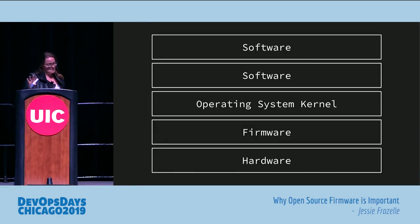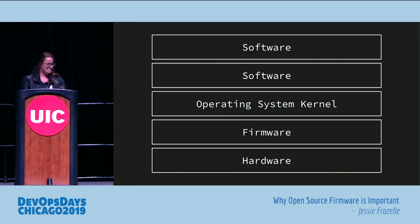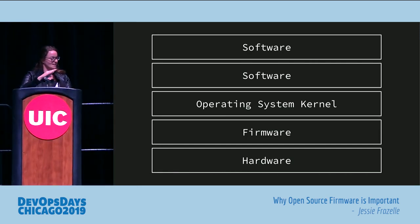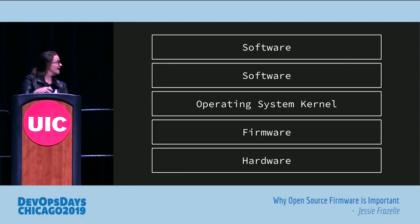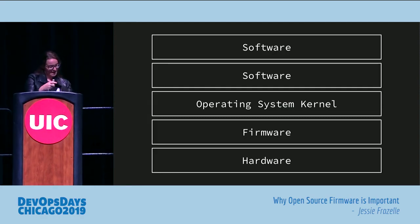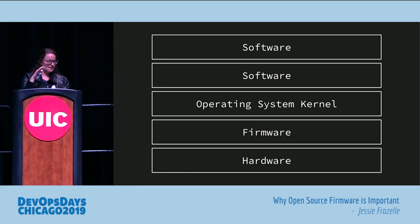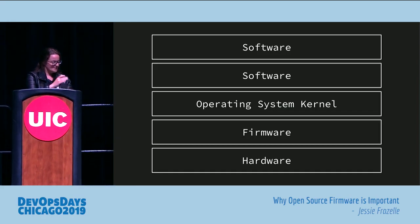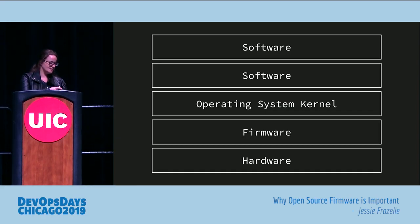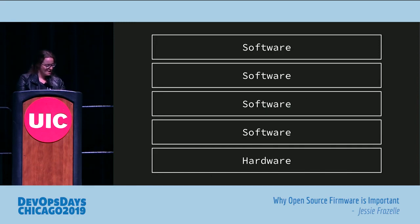If you think about the layers of software today, it's kind of like you have a bunch of software on top — like your app, and then maybe something that controls the app. And then you have your operating system kernel, and then you have firmware, and then you have the hardware. So it's like all software and then hardware, just to make it super general.